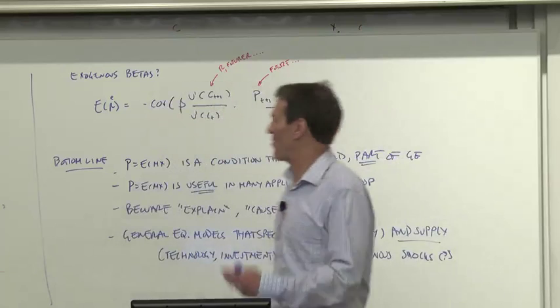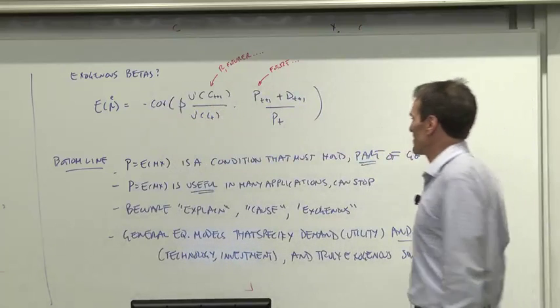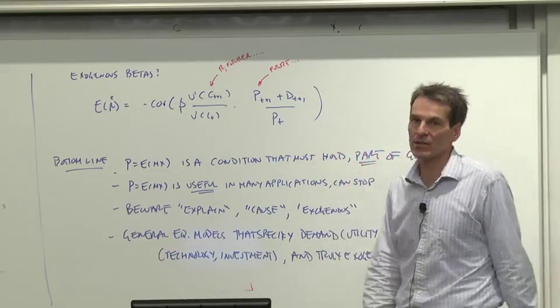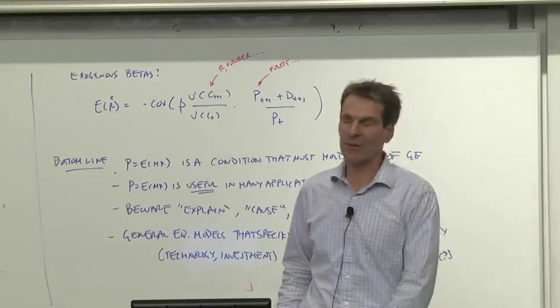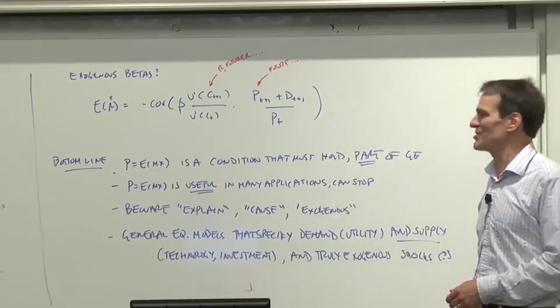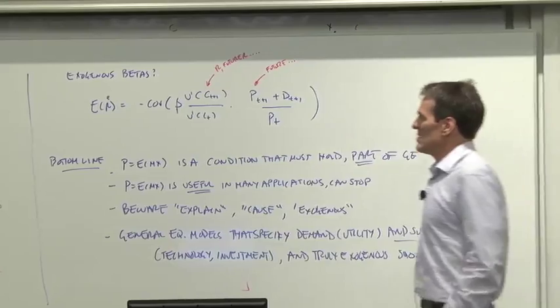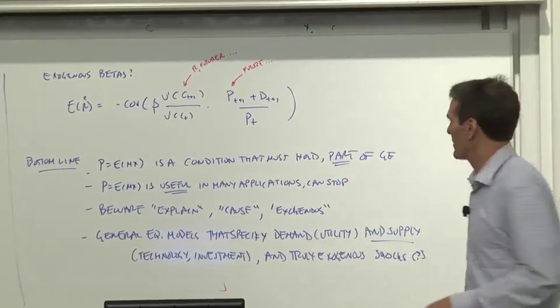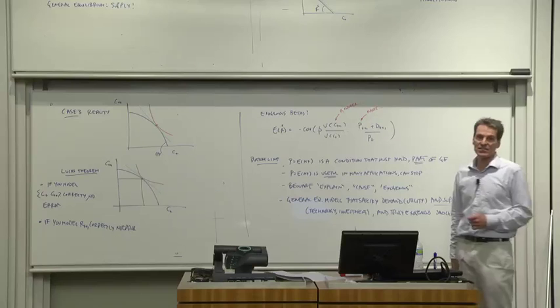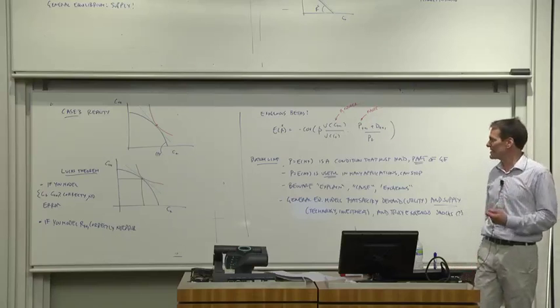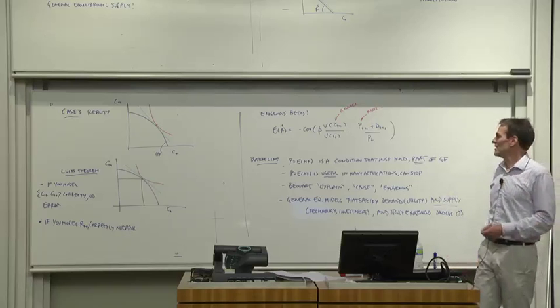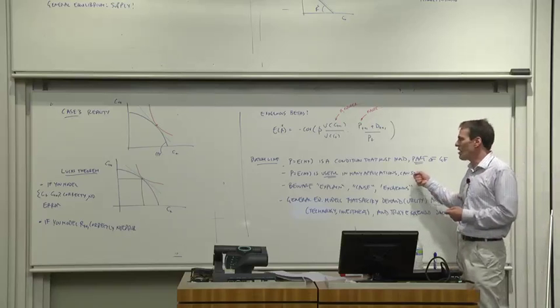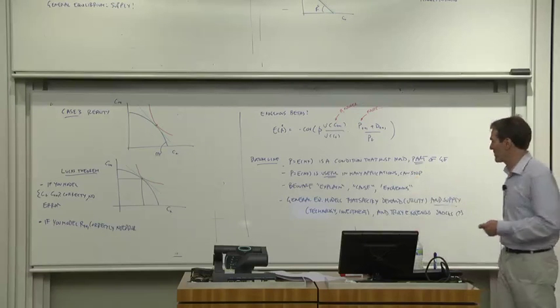Is this hopeless? No. The bottom line of this thought is, first, price equals expected discounted payoff. It's a condition that must hold. It's part of a general equilibrium. It's a demand curve. Well, demand curves have to hold in general equilibrium. Price equals expected discounted payoff, just looking at the demand side and not really worrying about supply, is very useful in many applications. And the bottom line for finance is not theoretical purity. The bottom line is, have you found a theory that is useful in the application at hand? You can often stop there and not worry about the general equilibrium foundations.